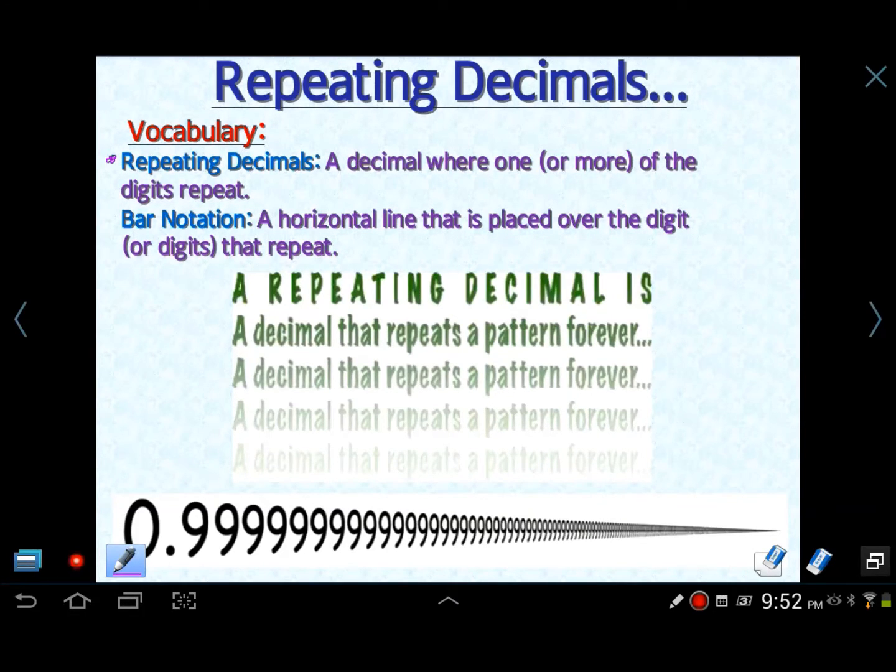So what is a repeating decimal? In the previous lesson, I talked a little bit about what a repeating decimal is. A repeating decimal is a decimal where one or more of the digits repeat. Here's an extreme example: 0.999999 forever. There's going to be other examples where maybe there's two numbers repeating, for instance 0.484848 forever. A repeating decimal goes on forever. There is a pattern to it, and you should be able to figure out what's repeating.